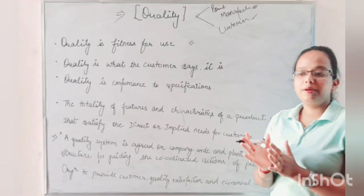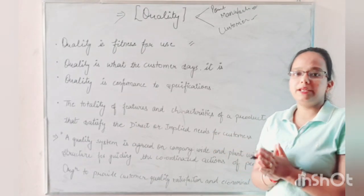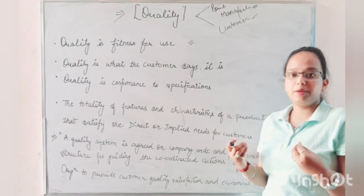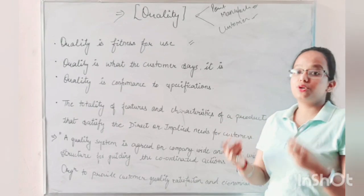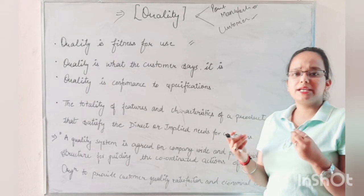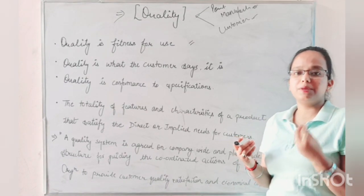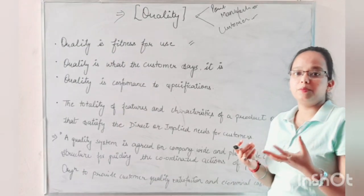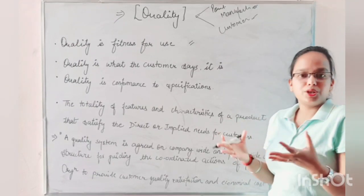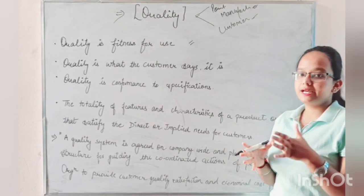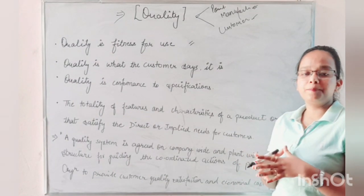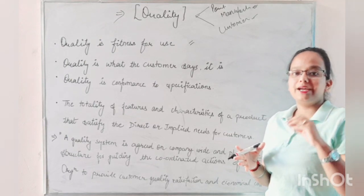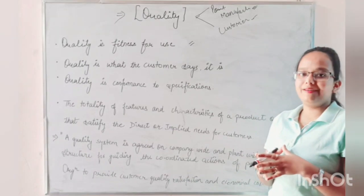Let's take an example. I bought a shirt from a market. What would be the demand for my shirt? The shirt should be comfortable, the fitting should be good, the fabric should be good, the stitching should be good. So as a customer, what a customer needs from the product — if it is fulfilled — that means it is quality oriented.